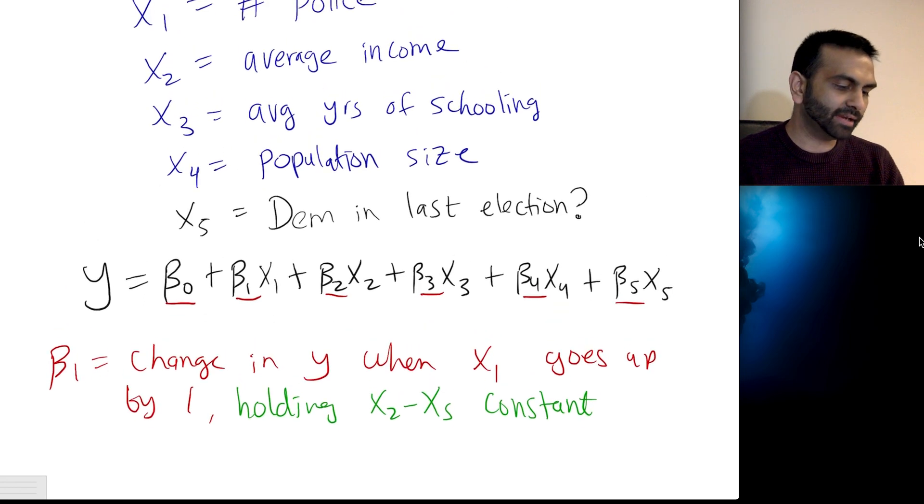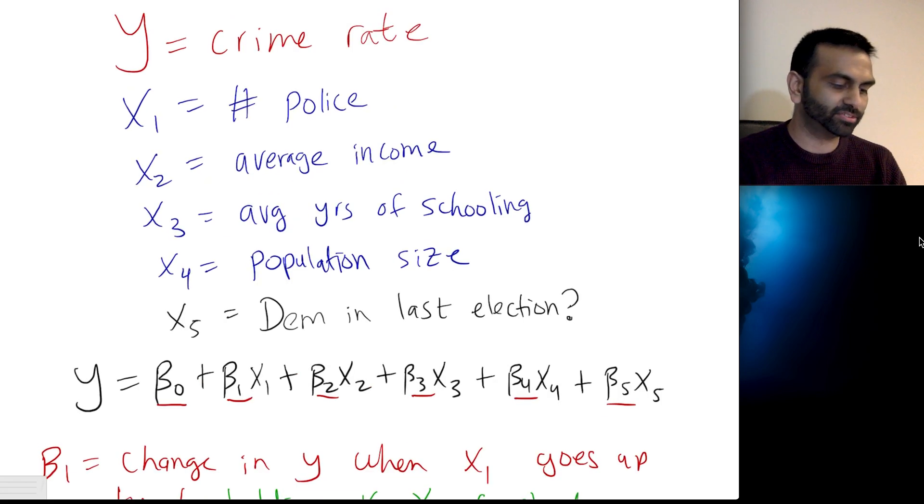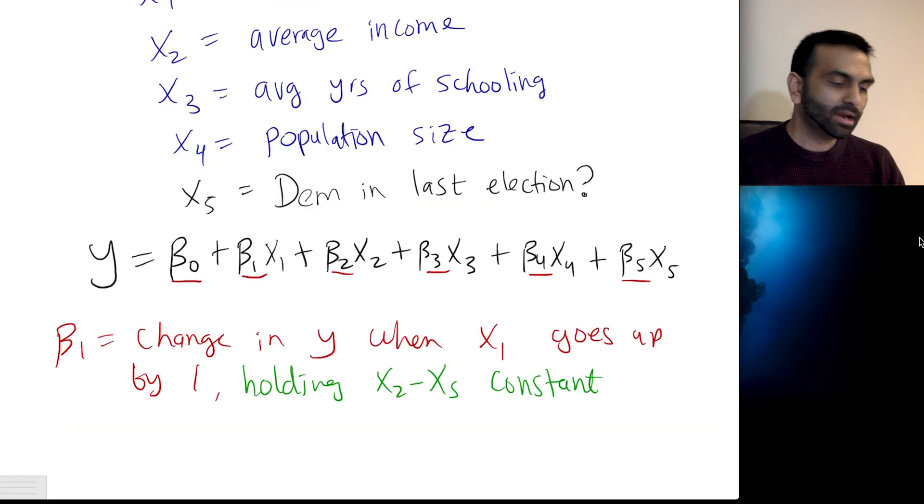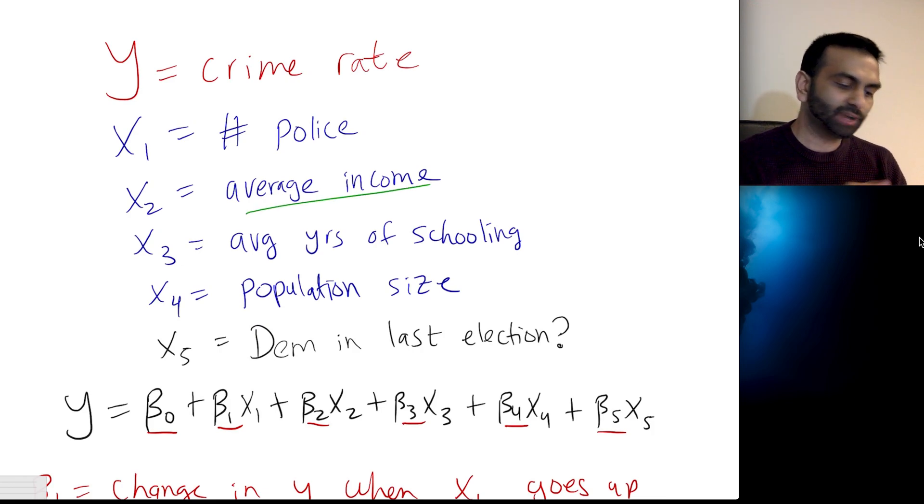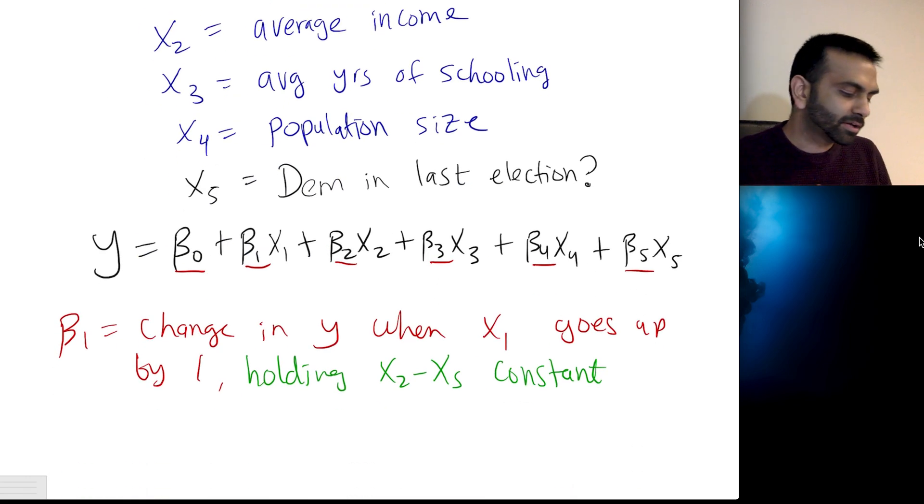But so that being said, each of these, the way we can interpret them, it's very similar to how you interpret the slope in a regular situation. In a regular situation, it's just a matter of how much y changes when x goes up by one. The only difference is here your beta one, the interpretation is it's the change in y when x1 goes up by one, holding everything else equal, holding x2 through x5 constant.